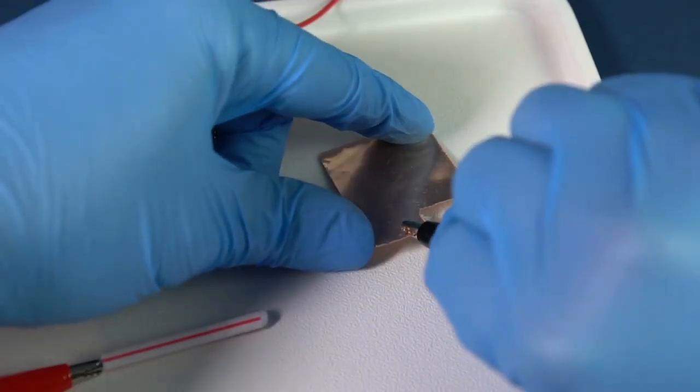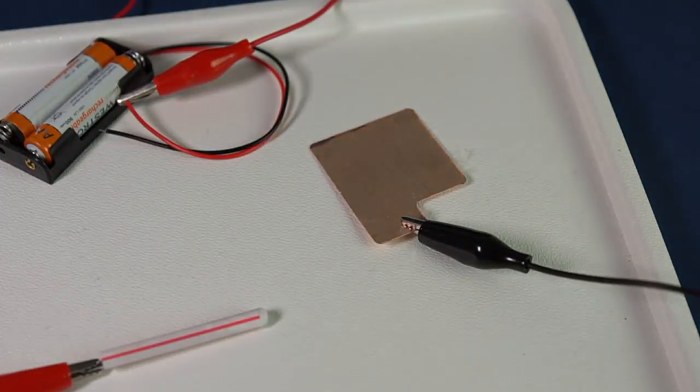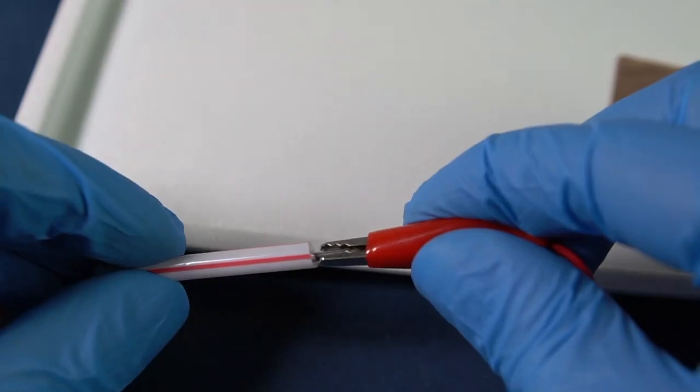Now connect the clean copper plate with the anode, which is positively charged, and the improvised zinc pen with the cathode, which is negatively charged.